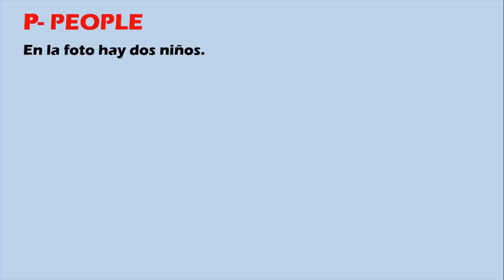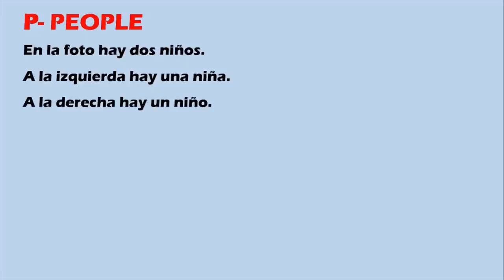Let's talk about people. When you are going to be mentioning things related to people, the simplest way would be 'en la foto hay' — 'in the picture there is' — and you put how many people are in the picture. For example, 'dos niños' — two children. Or 'a la izquierda hay una niña' — on the left there is a girl. 'A la derecha hay un niño' — on the right there is a boy.